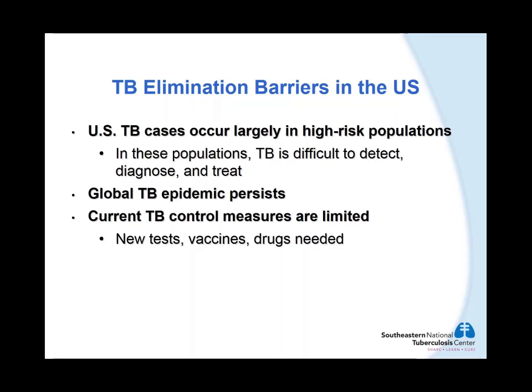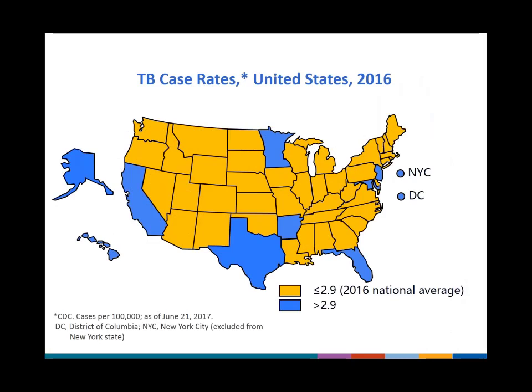Our current TB control measures are limited — we need newer tests, newer vaccines, and newer drugs in order to achieve TB elimination in the United States. On this map, you can see the TB rates by state. The states in blue have rates above the national average, which was 2.9 per 100,000 population in 2016. In particular, four states carry the highest number of TB cases: California, Texas, Florida, and New York.